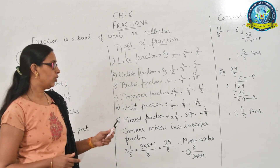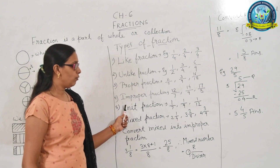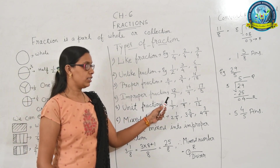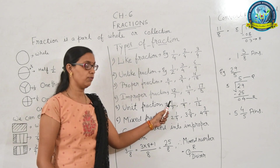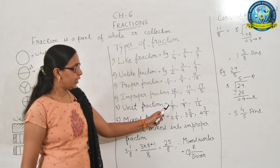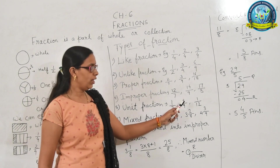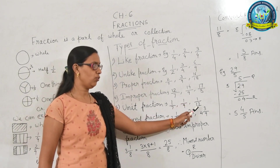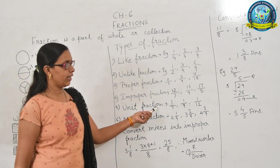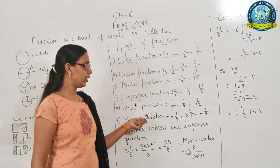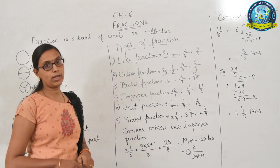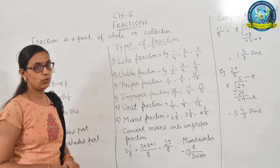Next is unit fraction. When the numerator of any fraction is 1, it is called a unit fraction. Examples: 1 upon 7, 1 upon 9 and 1 upon 12. All the numerators are 1. Unit ka matlab 1 hota hai, toh jab numerator 1 ho, usko unit fraction bolte hain.